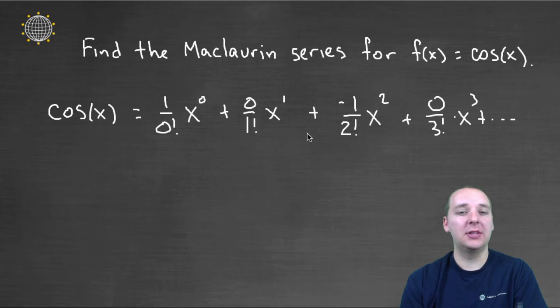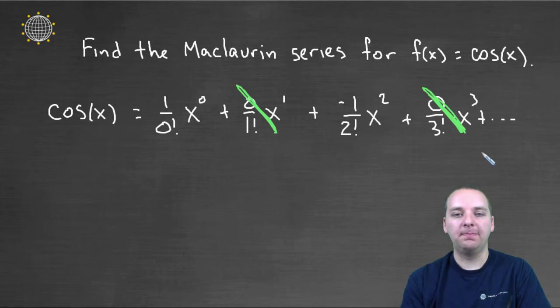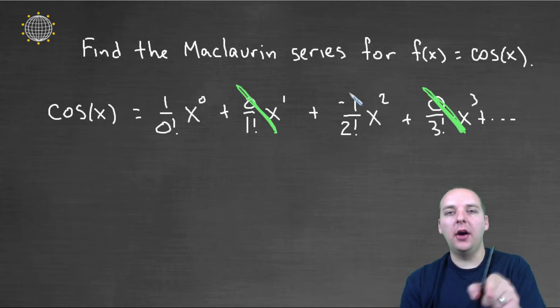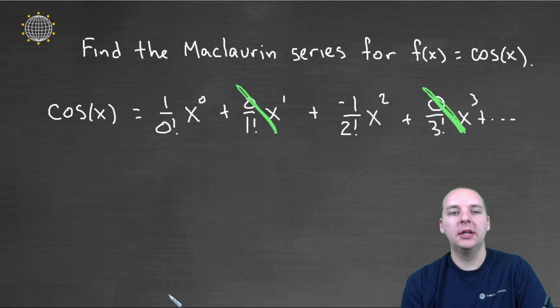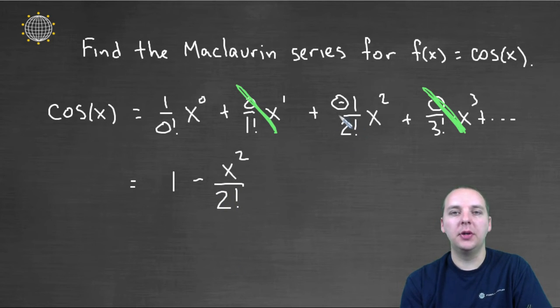So this is the Maclaurin series for cosine, but that's a mess. I see a lot of things. First of all, I see that these terms with zero, zero times anything is zero. So every other term is automatically gone. So it looks like we're only getting every other term here. Now let's write this down a little bit more explicitly. Zero factorial by definition is one. One over one is one. X to the zero is one. So this is just a one. This term is gone because of the zero. This term here is minus, because of the negative, x squared over two factorial. So that's pretty clear from here.